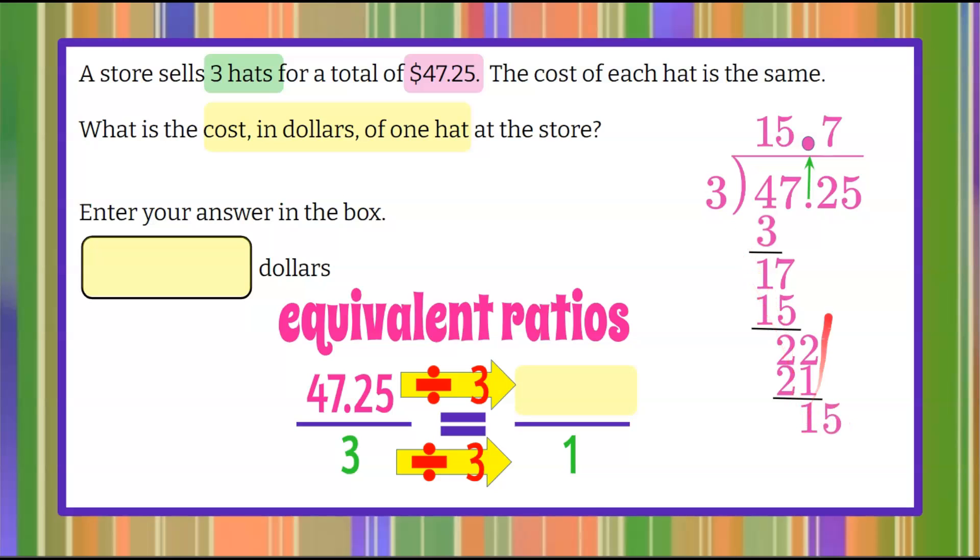Bring down our last value of five. Three goes into 15 five times. Five times three is 15. 15 subtract 15 is zero. So I have a remainder of zero. So my answer is $15 and 75 cents.